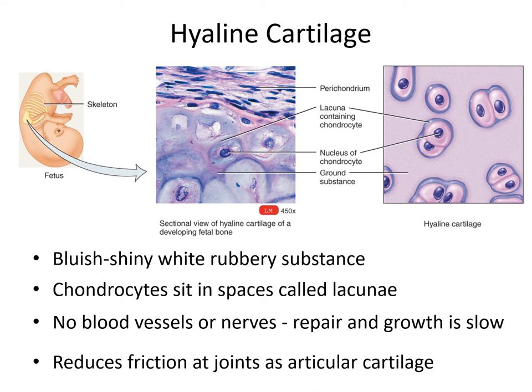Hyaline cartilage is this bluish, shiny, white, rubbery substance — it's what you see on the end of a chicken drumstick. It consists mostly of matrix, so when you look at it under the microscope you won't typically see fibers. You'll see this background matrix, and within it these holes or spaces called lacunae. Within the lacunae we have chondrocytes — the cells that maintain cartilage. There are no blood vessels or nerves, so repair and growth is very slow. One of the main functions of hyaline cartilage is to reduce friction at joints.